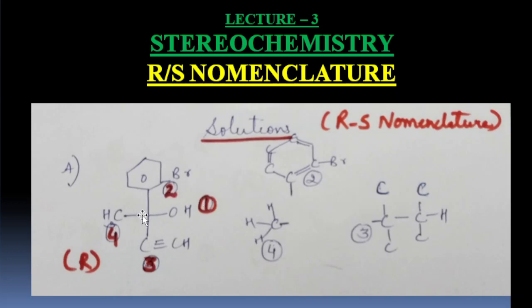Going 1, 2, 3 we are getting S. But the 4th group is on the horizontal, so we will reverse it and the answer is R. That is the answer to the first question.